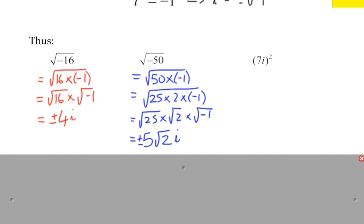And again, with our positive and negative, the square root of negative 50, we can write as positive or negative 5√2i. And we can work the other way,